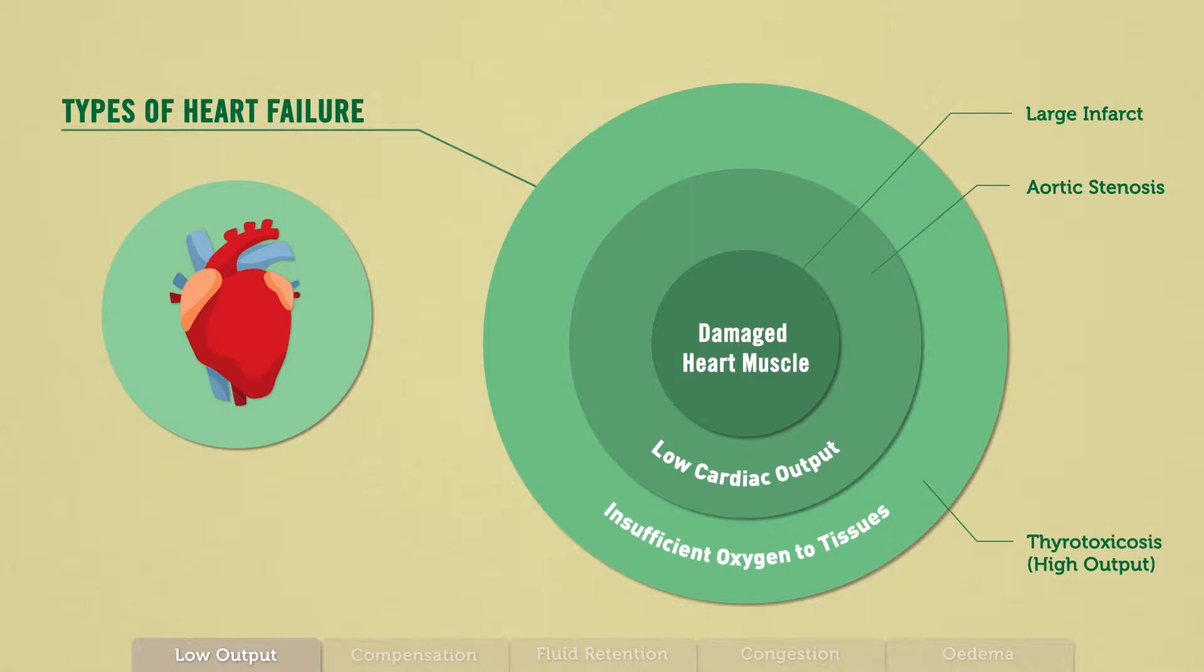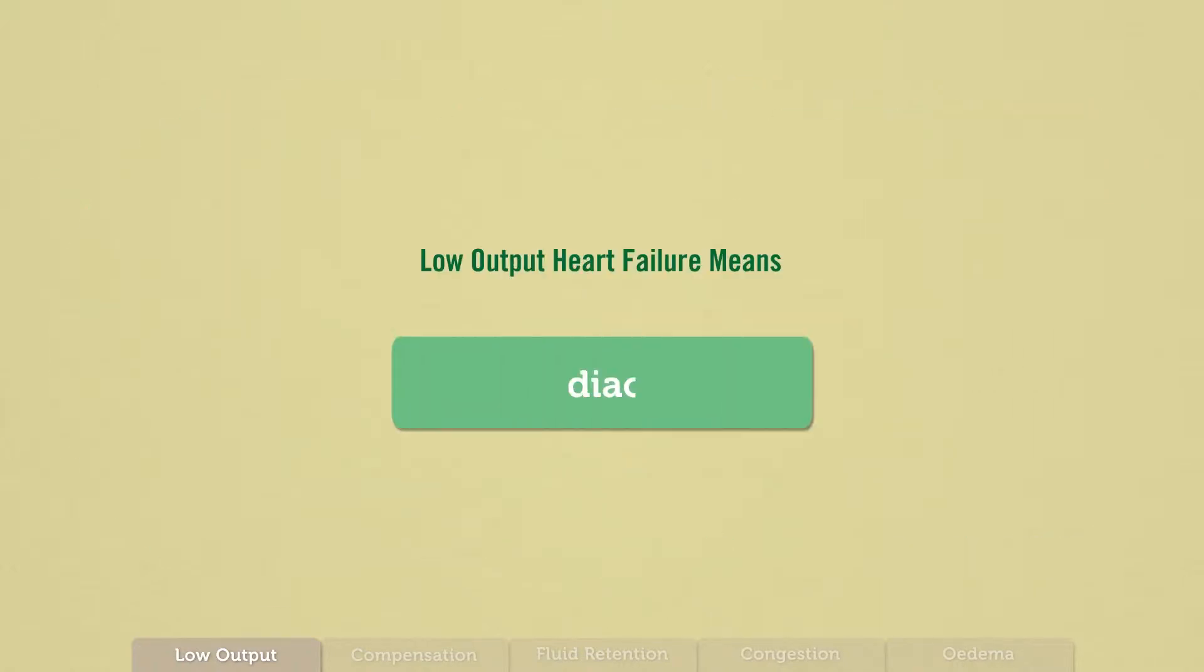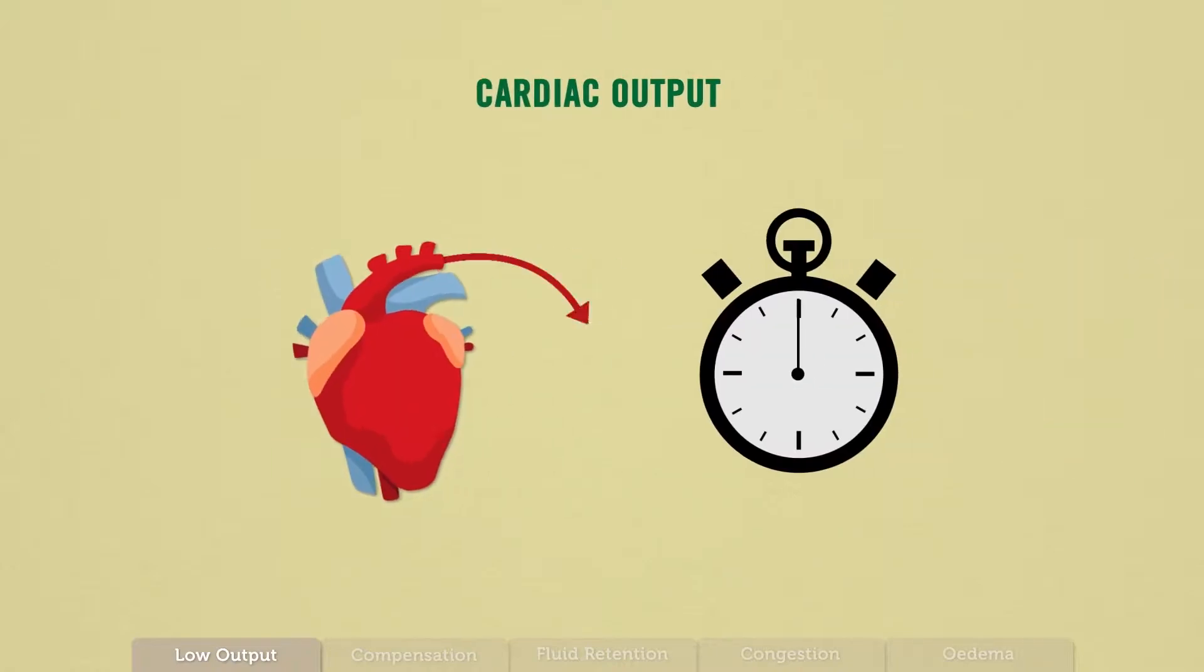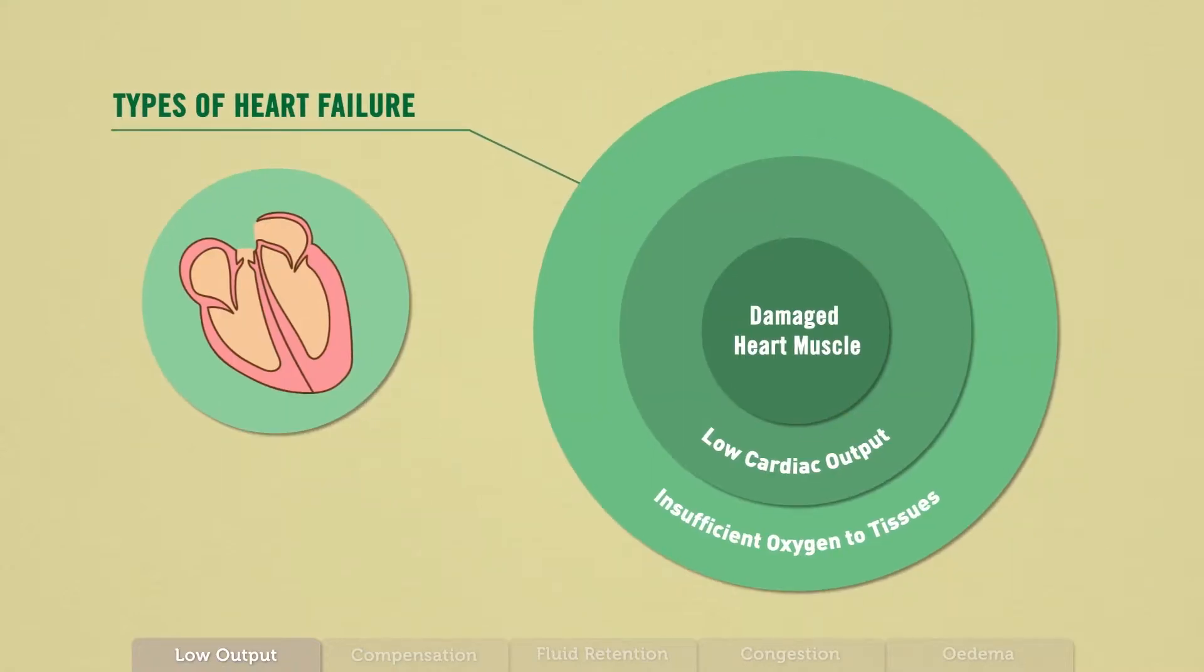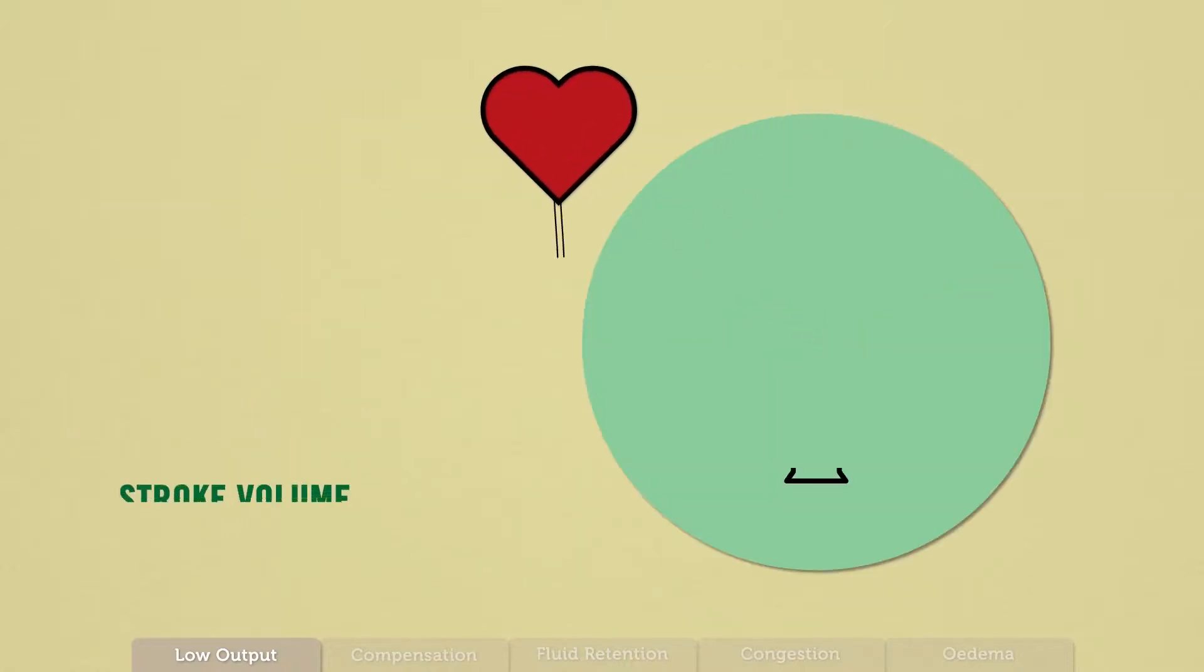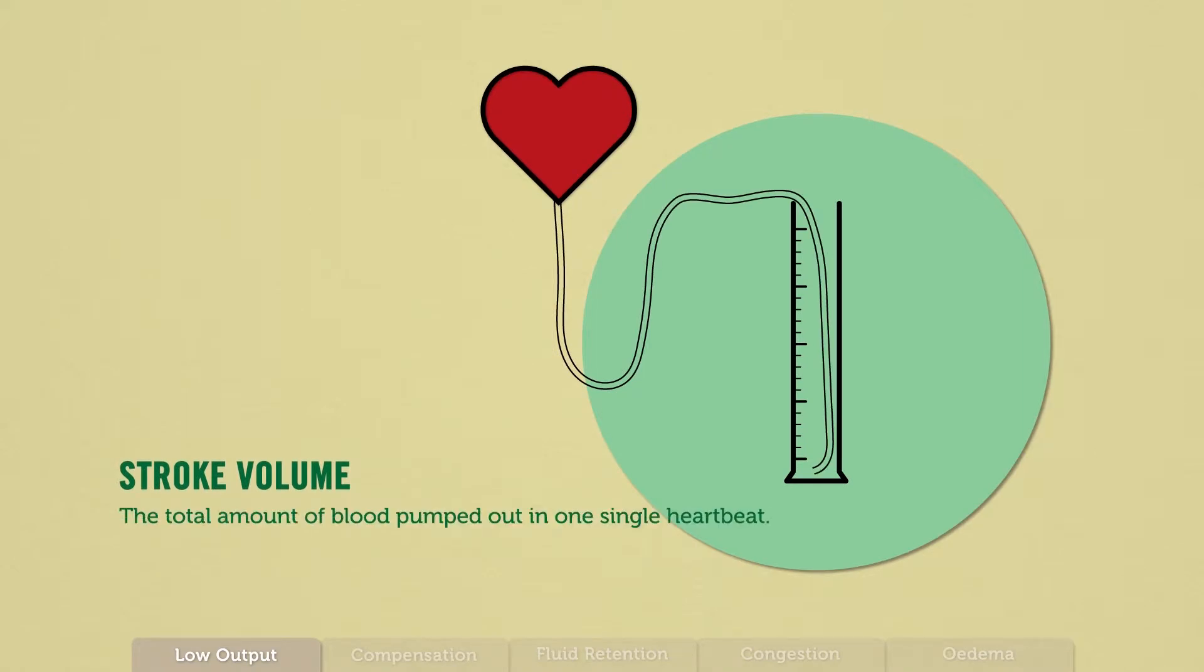What is low output? Low output refers to low cardiac output. Cardiac output is the amount of blood pumped per minute. Why is my heart not pumping out enough blood? Low output heart failure is usually caused by damage to the heart or valves, for example, by a massive myocardial infarct. Damage to the myocardium decreases stroke volume. Stroke volume is the amount of blood in milliliters pumped out of the heart in one single heartbeat.